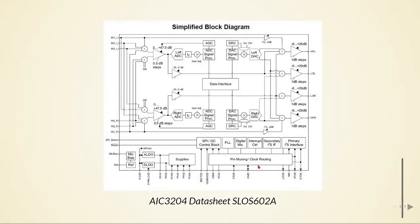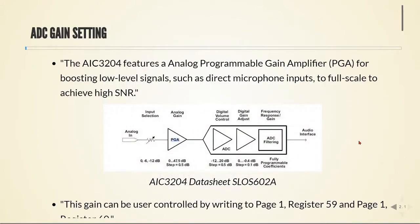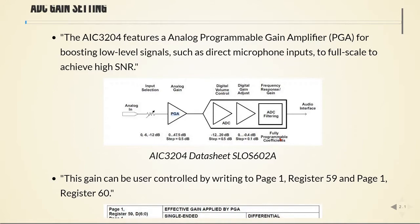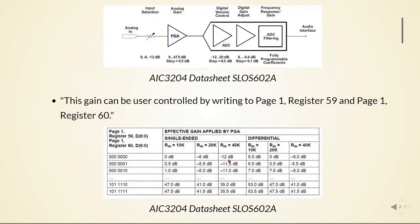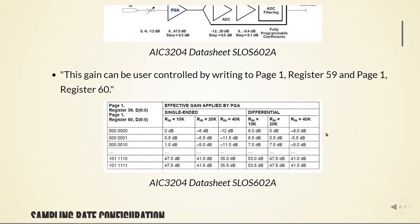We must take a look at the datasheet of the audio codec to see how we can make these configurations. The audio codec features an analog programmable gain amplifier, the PGA, for boosting low-level signals such as direct microphone inputs to full scale to achieve a high signal-to-noise ratio. This PGA can be user-controlled by writing to page 1, registers 59 and 60. We can also set the input resistor to three different values to change the input impedance. Depending on the value we set, we go from 0 dB to 47.5 dB.